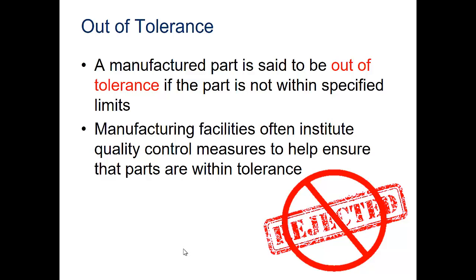A manufactured part is said to be out of tolerance if the part is not within specified limits. Manufacturing facilities often institute quality control measures to help ensure the parts are within tolerance. They don't inspect every single part. Obviously, if your business makes washers and makes 10,000 washers a day, you won't inspect every single washer. You inspect a sample, which might be 100 or maybe even 1,000, and then based on that sample, you predict if the rest of the batch will pass inspection or if it should all be scrapped and thrown away or even remelted and tried to be made into washers again.